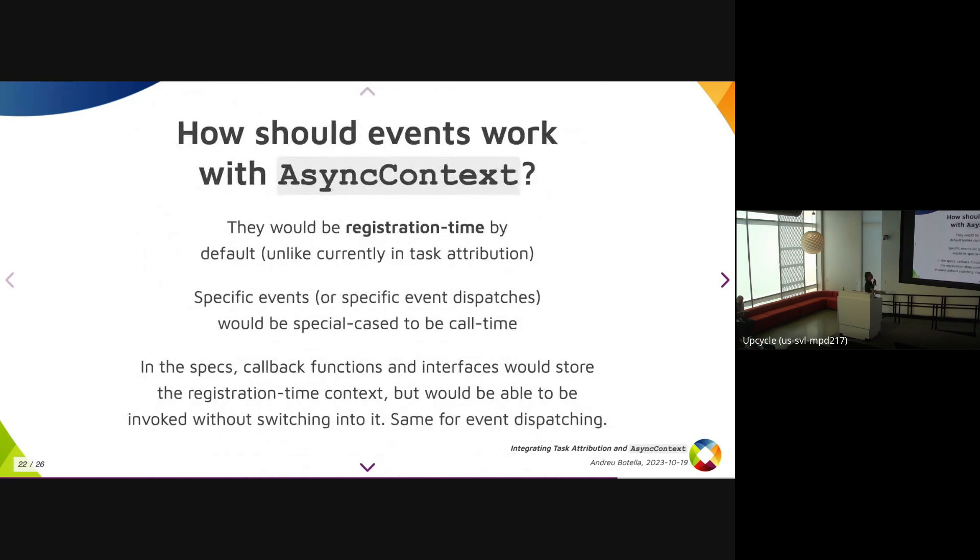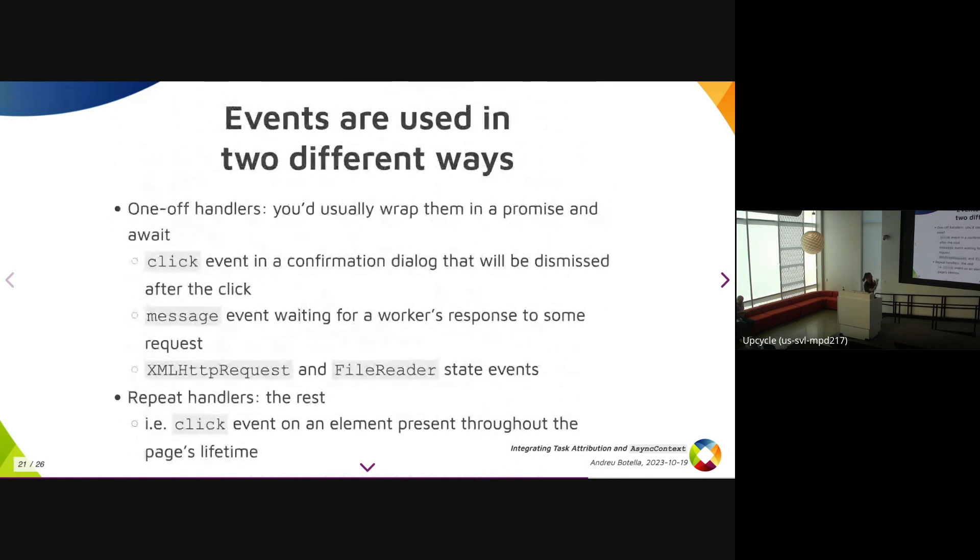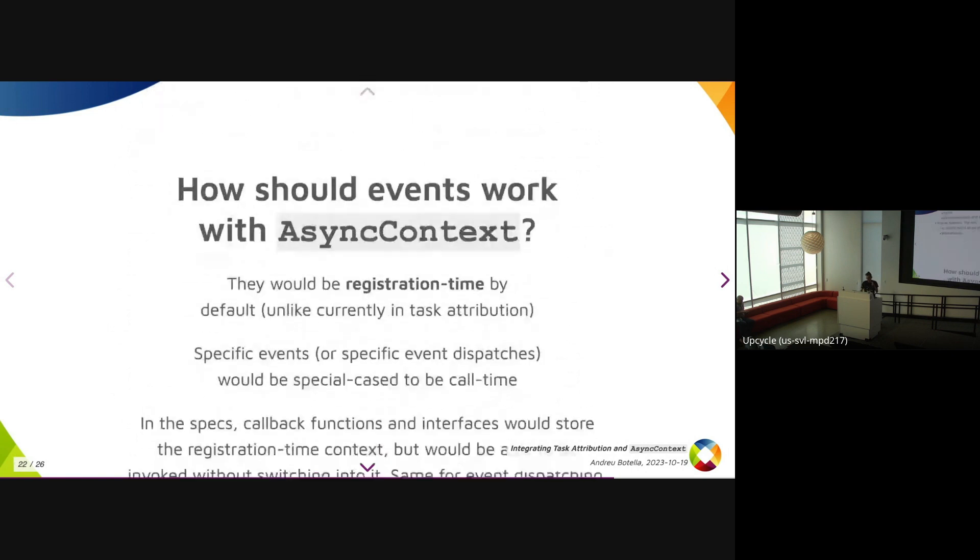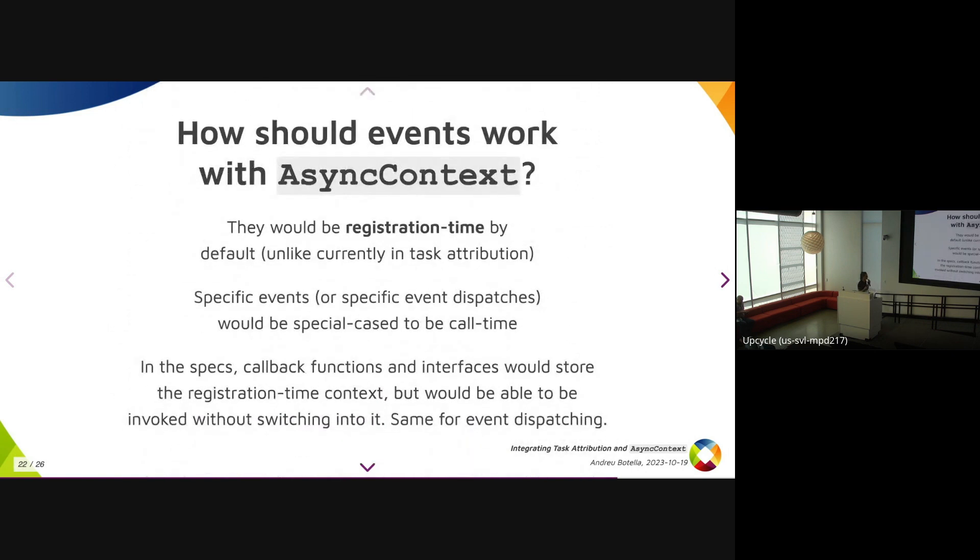So given this dichotomy, notice that click can be a one-off handler and a repeat event, and it's not necessarily feasible, I don't think, for the browser to be able to tell the difference. Like you could maybe use heuristics, but this all brings us to the question of how events would work with async context, how they should work, which context they should propagate.